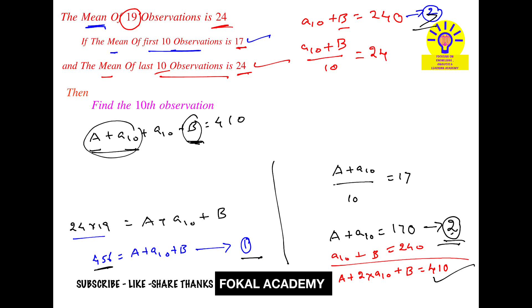So 456 plus a₁₀ equals 410. Therefore, a₁₀ equals 410 minus 456, which simplifies to a₁₀ equals negative 46. The tenth observation is negative 46.